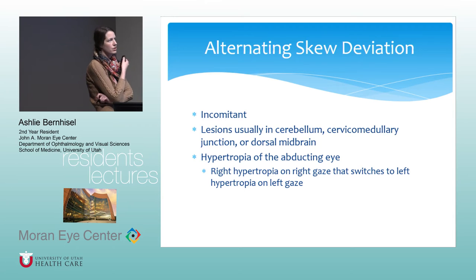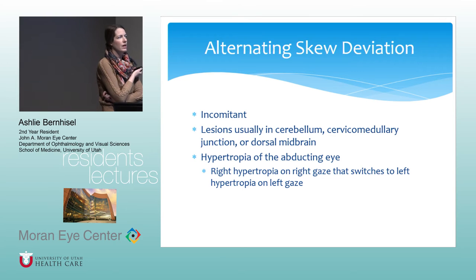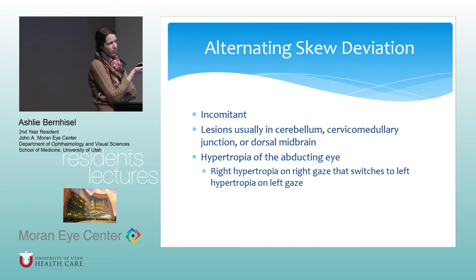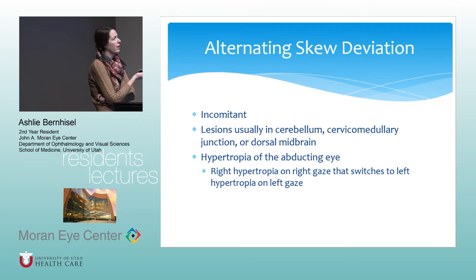Alternating skew deviation is incomitant and causes a hypertropia of the abducting eye — so there's a right hypertropia on right gaze that switches to a left hypertropia on left gaze. The lesion is usually in the cerebellum, cervical medullary junction, or dorsal medulla.